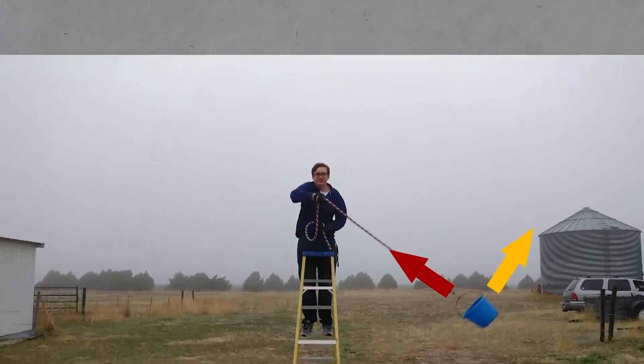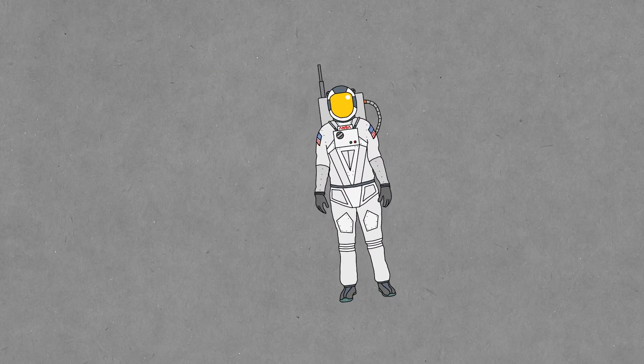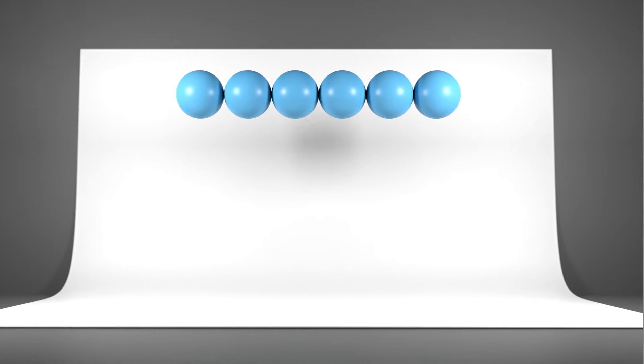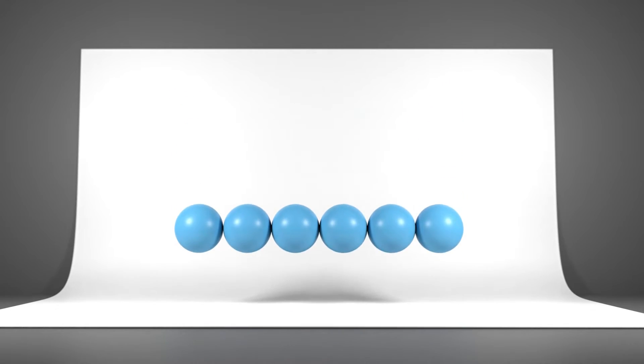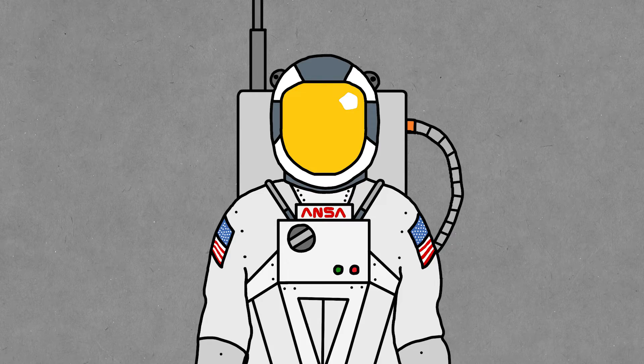Now another question you might be asking is why things are weightless in space if there's still gravity. And this brings us back to the beginning of this video, where I talked about objects falling at the same rate. I had the example of two balls falling close together, and how they didn't affect each other. And that's exactly what's happening when you're weightless.